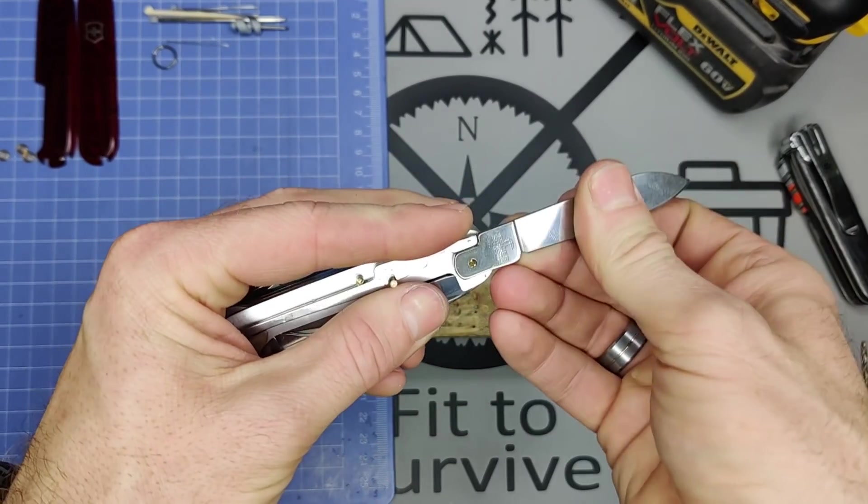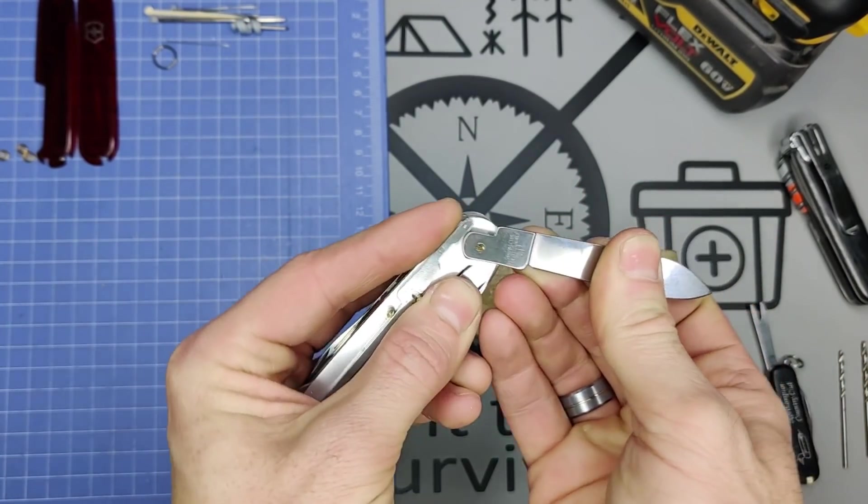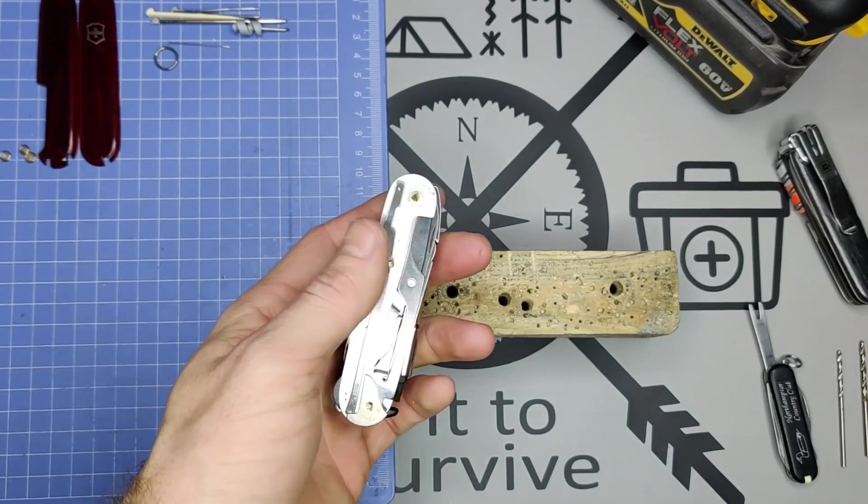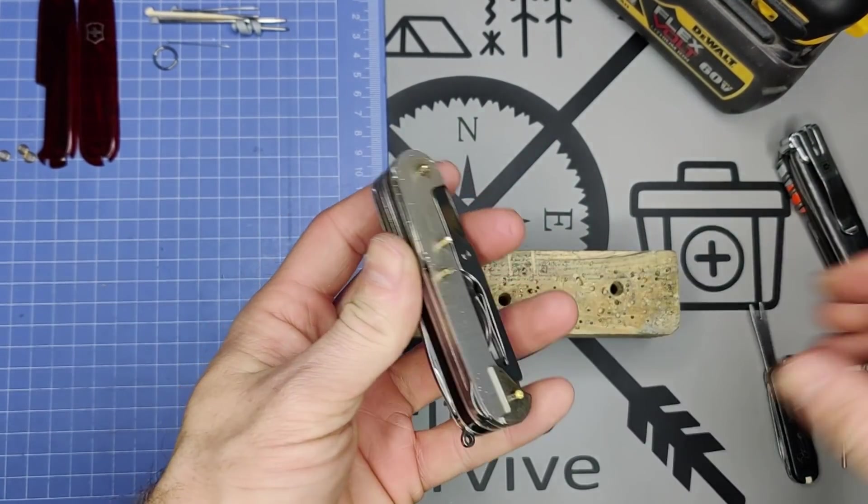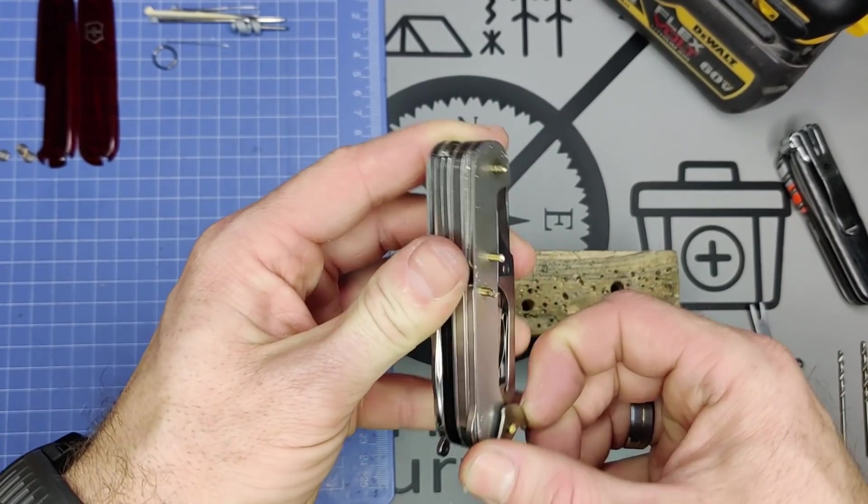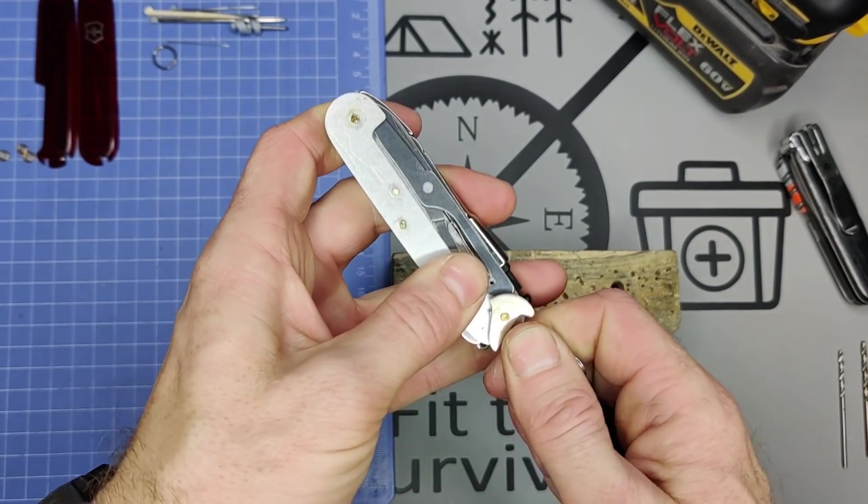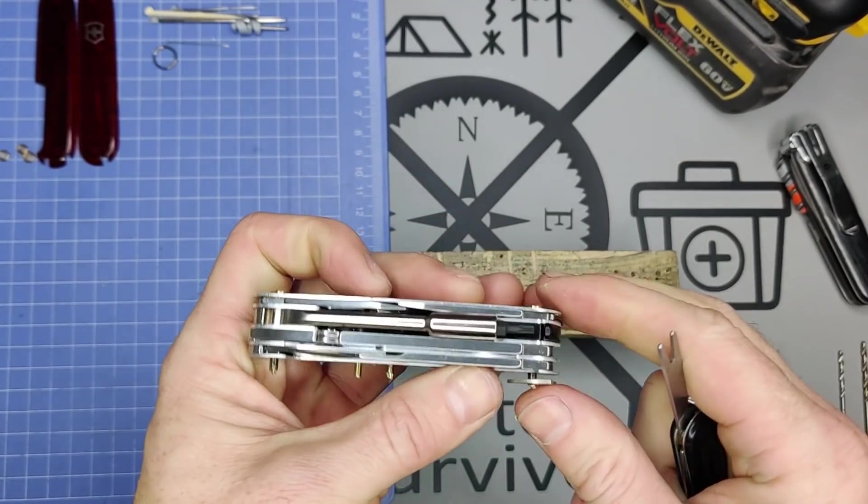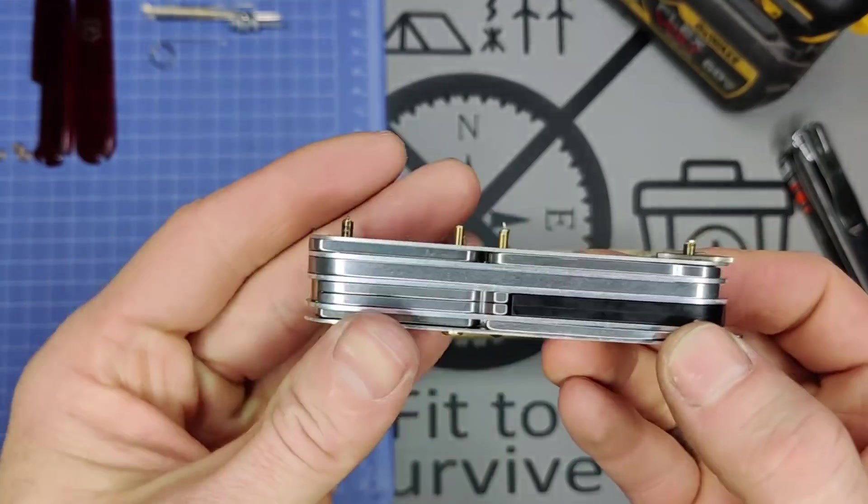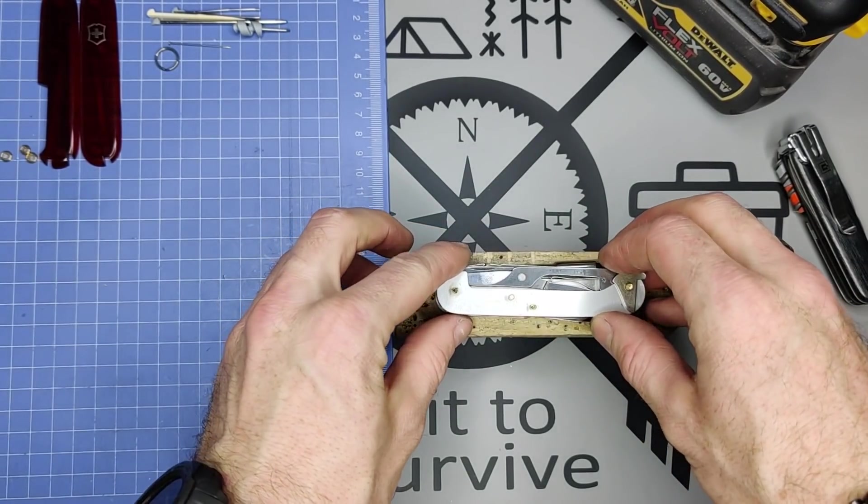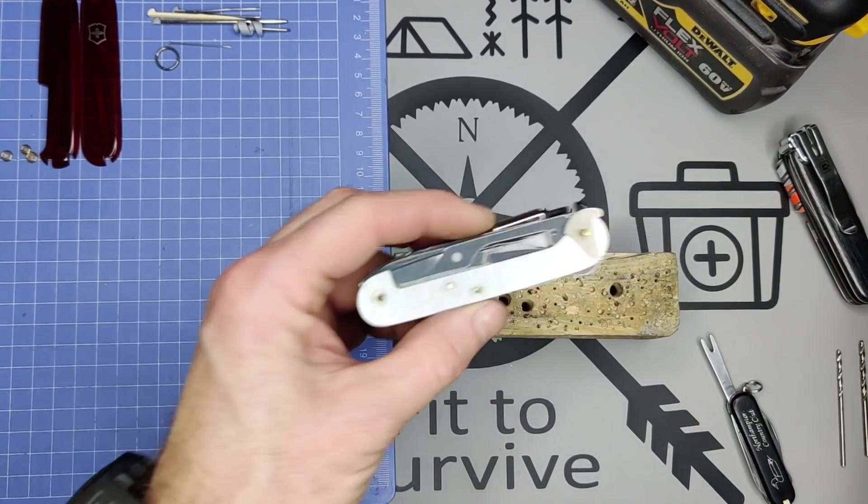All right, there we go. So all of those tools just removed, I'm not going to be using. All right, so what's happened here is after drilling, the tips have kind of mushroomed. So we just need to bite off these tips.